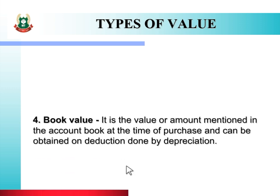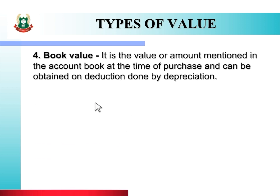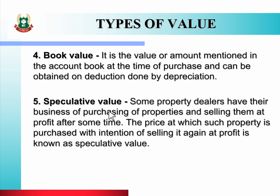Next type of value is book value. It is the amount mentioned in the account book at the time of purchase, and can be obtained after deduction done by depreciation. Property खरीदते समय account book में उसकी जो value रहती है उसे book value कहते हैं, और यह book value depreciation deduct करने के बाद निकालते हैं।